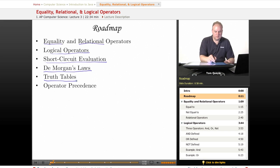Look at truth tables, which are a way of determining the value of a complex Boolean expression. And then finally, we'll conclude by talking about operator precedence. That is, when you have multiple operators in an expression, what order are they evaluated in?